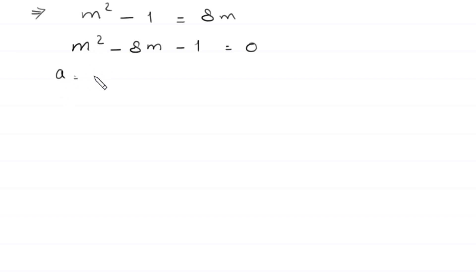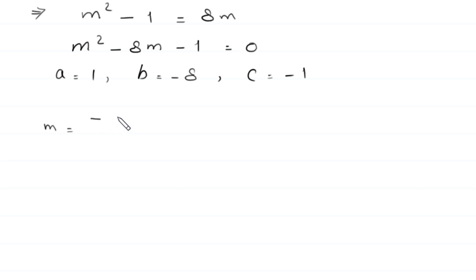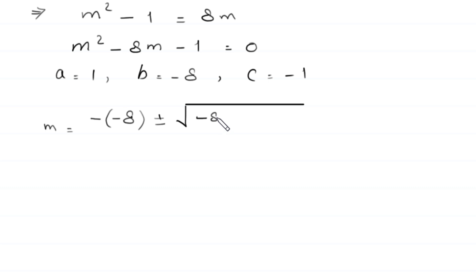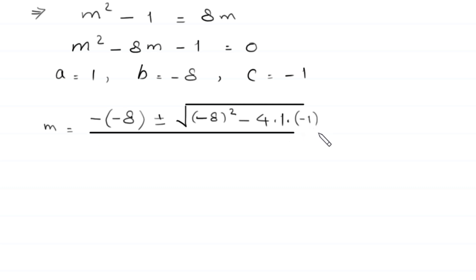In this equation, a is equal to 1, b is equal to negative 8, and c is equal to negative 1. According to the quadratic formula, m is equal to negative b, which is 8, plus or minus square root of b squared — negative 8 squared — minus 4 times a times c, which is 4 times 1 times negative 1, all divided by 2 times a, which is 2 times 1.